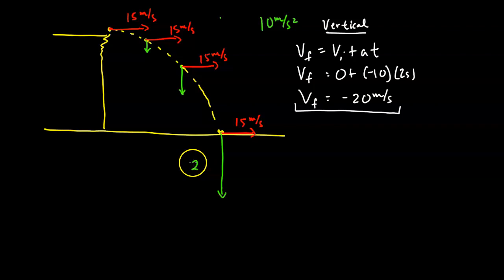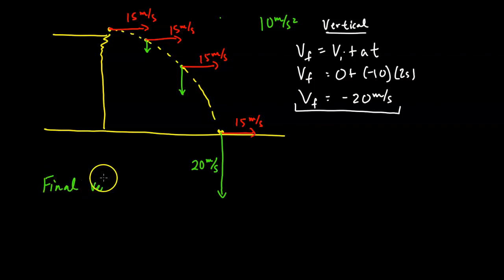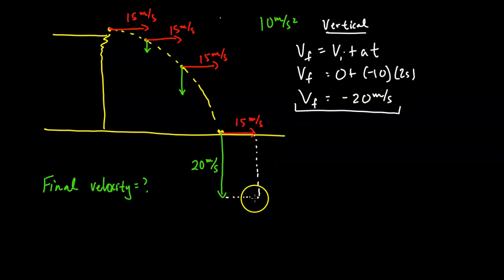The negative sign on the vertical velocity simply means it's directed downward. Now for the actual final velocity — not just horizontal or vertical, but the total speed when it hits the ground — we combine both components. I'll draw a rectangle using the tip-to-tail vector addition method.